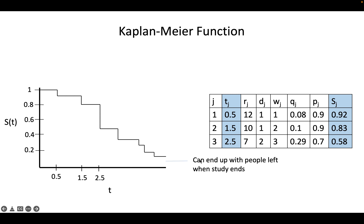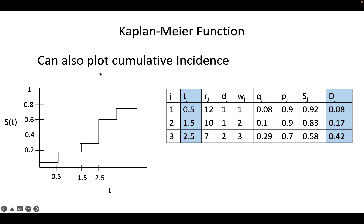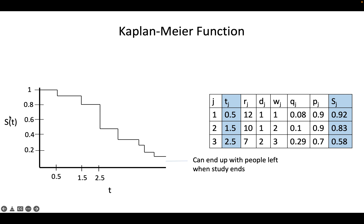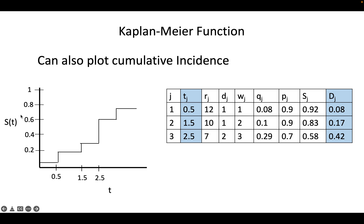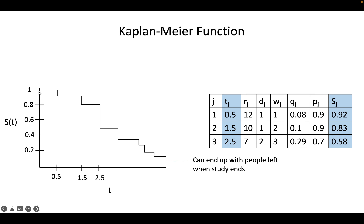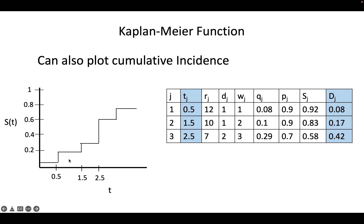That doesn't always happen. You can end up with people left in the study who didn't have the event by the time follow-up ended, and at that point you're not able to make interpretations beyond what you have. Instead of plotting survival, you can plot cumulative incidence — it's basically 1 minus the probability of survival, which is the probability of death or the event, and instead of descending downwards, it climbs upwards.